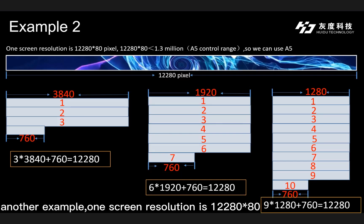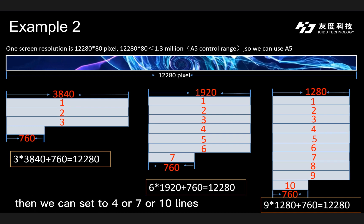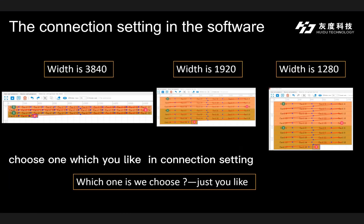Another example: if one screen resolution is 12280×80, which is less than the control range of A5, you can choose A5. Then you can set it to 4, 7, or 10 lines — choose whichever you like in the connection settings.